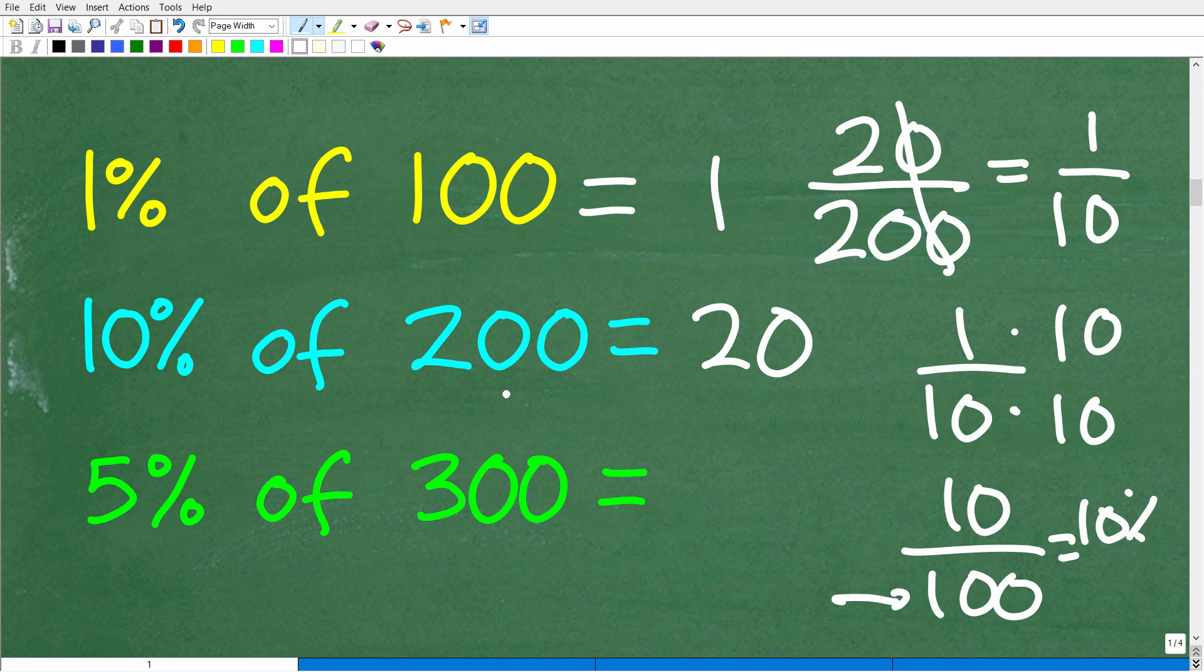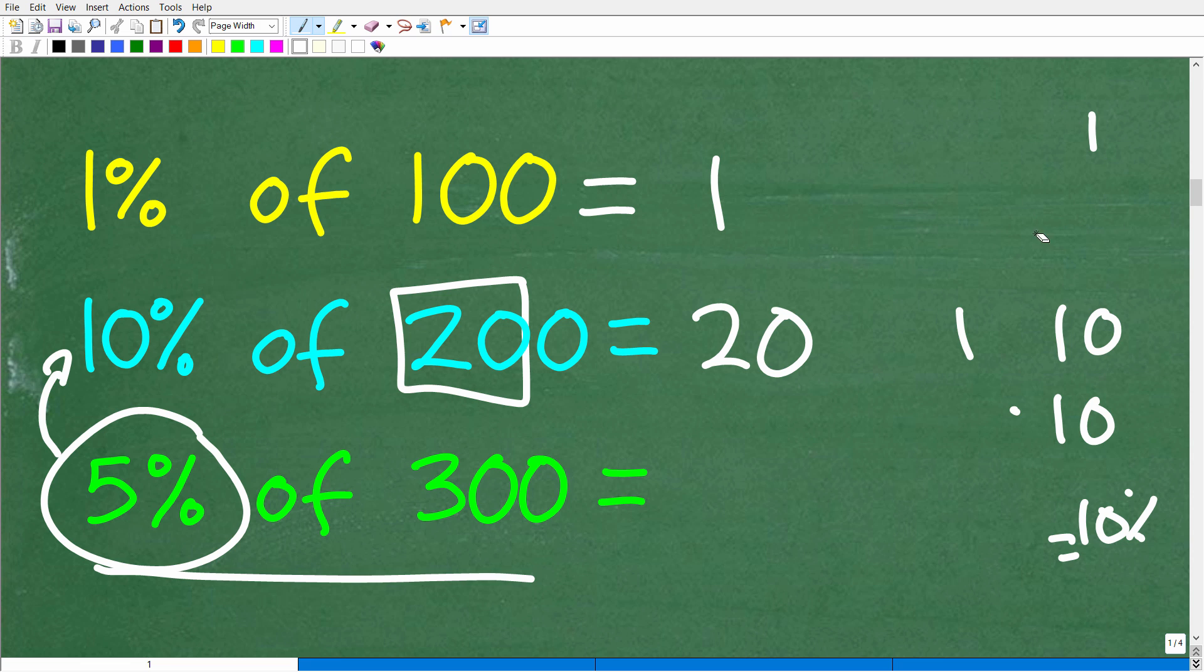So now that you understand that, you should be able to figure out this next problem. So what is 5% of 300? Well, you might be thinking, if I know how to figure out what 10% of a number is, so 10% of 200 is just these first two digits right here, it's 20. So what do you think 10% of 300 is? Now the question is 5%, but maybe we can get 10% first. So what is 10% of 300? Well, if 10% of 300 is equal to 30, I would say you're thinking right.